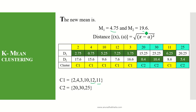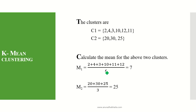We have to recalculate our mean values with the new cluster formations. For cluster C1 containing 2, 4, 3, 10, 11, and 12, we get (2+4+3+10+11+12)/6 = 7. For the second cluster C2 containing 20, 30, and 25, we get (20+30+25)/3 = 25.